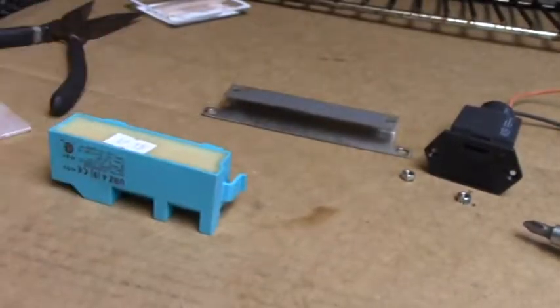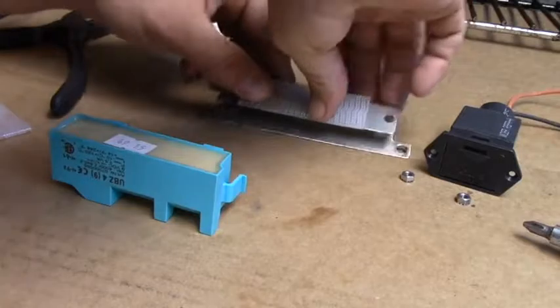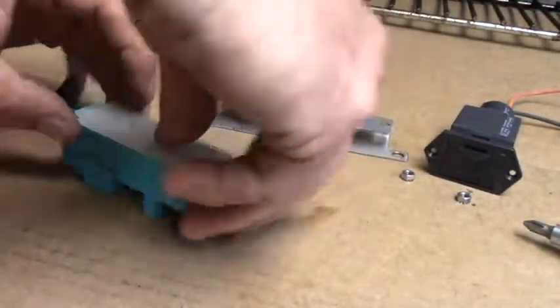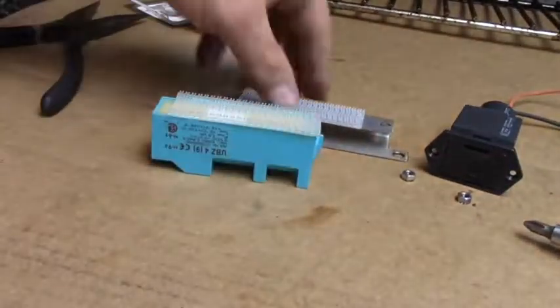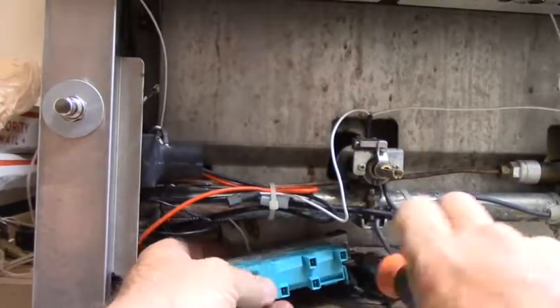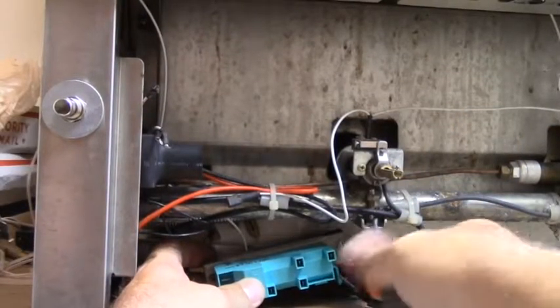Installing a new module with high-strength velcro on the original mounting bracket. Attach the switch and battery to the new ignition module instead of wiring the valves.